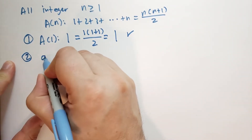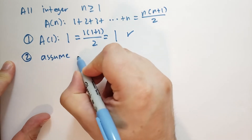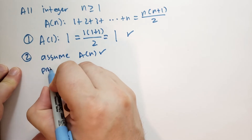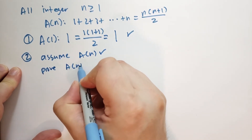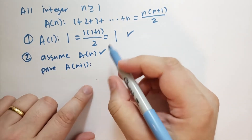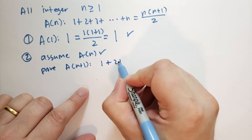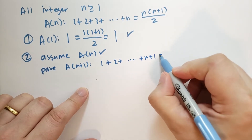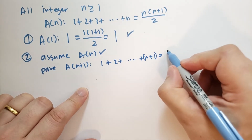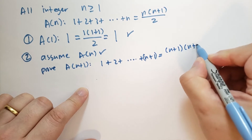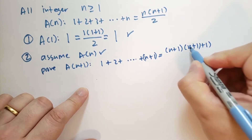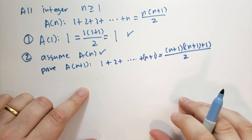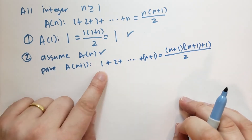Now we assume A(n) is true and prove A(n+1). What does A(n+1) say? It says that 1 plus 2 plus 3 all the way up to n+1 is equal to (n+1) times (n+1+1), divided by 2. We're assuming the first part is already true, and we're going to prove that the second part is true.